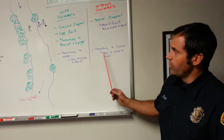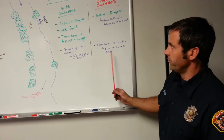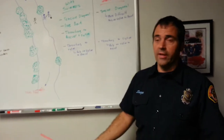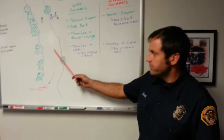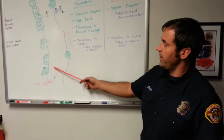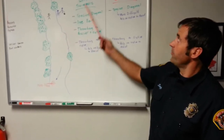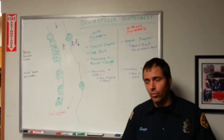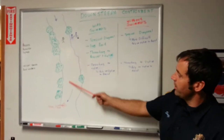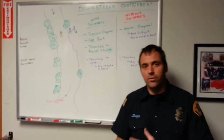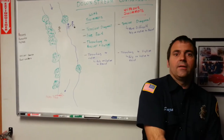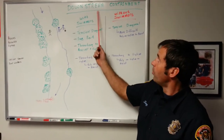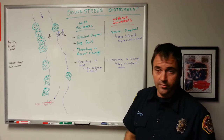If you throw a bag to the victim, they may not be able to hang on, and then you're chasing the victim downstream. If you have downstream containment, the victim should not be able to get past you — that's critical. If he does get downstream, you have to move your entire rescue operation and reset using the same principles as before. It's really important that the victim doesn't get past your downstream containment.